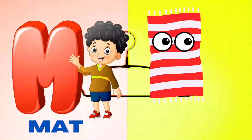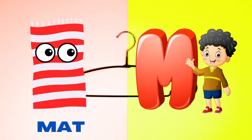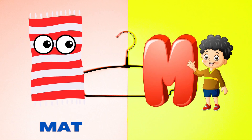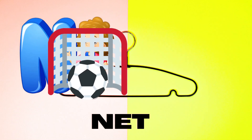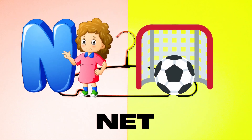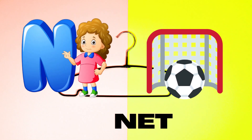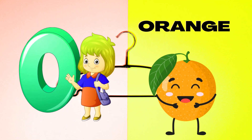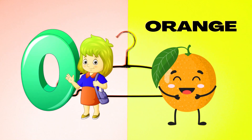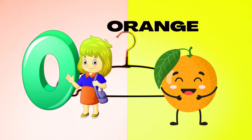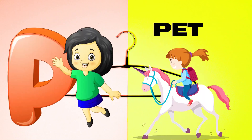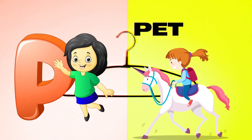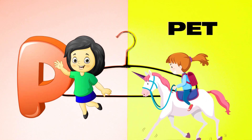M is for Mat, M-M-Mat. N is for Net, N-N-Net. O is for Orange, O-O-Orange. P is for Pet, P-P-Pet.